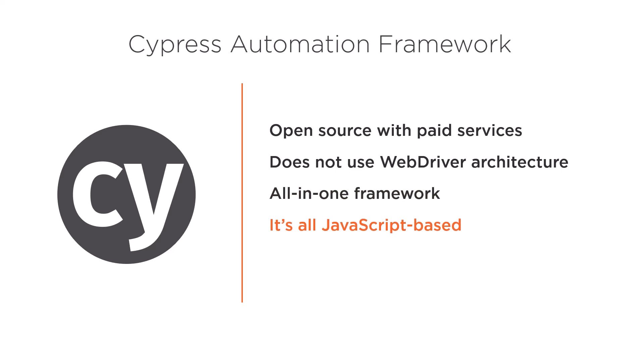Cypress is entirely written in JavaScript, and since it runs within the context of the browser, you can manipulate your application while it's running using JavaScript. This makes it easier to stub or mock APIs in your application in ways which WebDriver can't. The other major feature Cypress offers, and another primary reason I want to use it in this course, is the rich developer experience using the built-in test runner and debugging interface. We'll see this in action soon, but it makes writing end-to-end tests a lot more fun and interesting compared to the command-line-only experience of writing WebDriver tests.